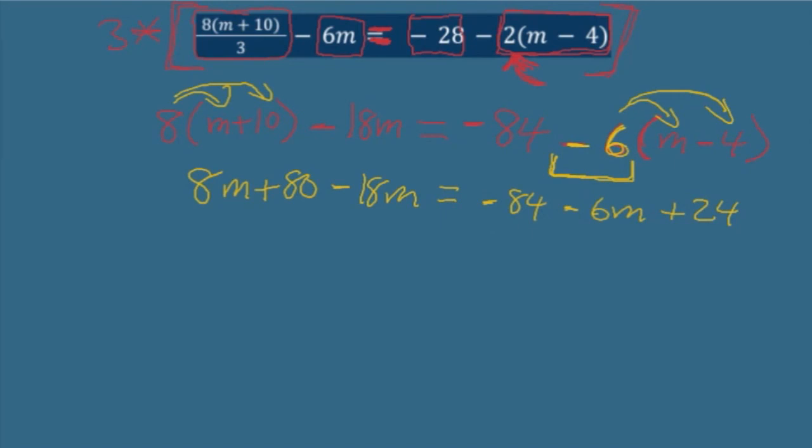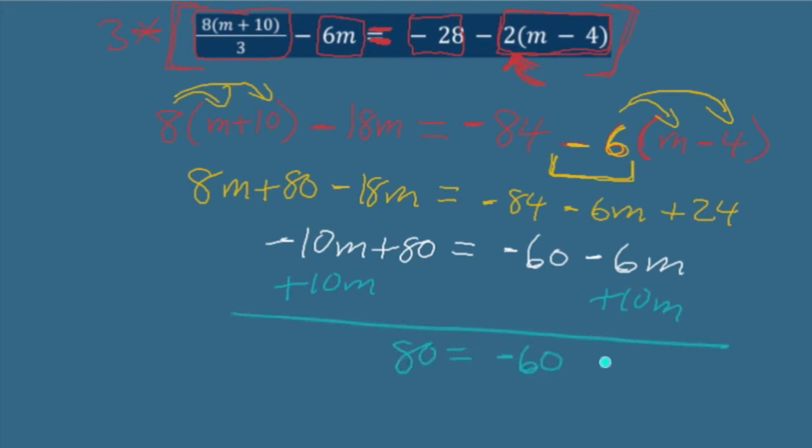Combine like terms. Negative 10 m's, plus 80, equals negative 60, minus 6 m's. Use an opposite operation. Plus 10 m's, plus 10 m's, both sides. 80 equals negative 60, plus 4 m's. Add 60 to both sides, 140 equals 4 m's. Divide by 4 on both sides, m equals 35.